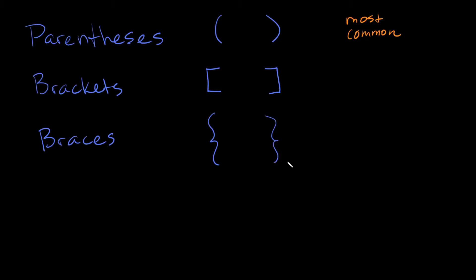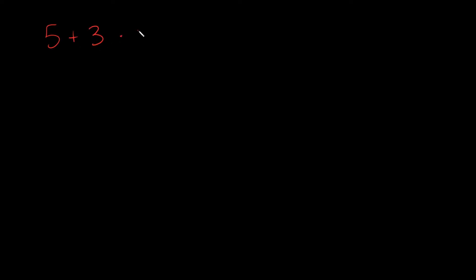Okay so let's do an example. If I wrote five plus three times two, where the parentheses are matters — it is super important. You always solve whatever is inside the parentheses first. So if I put the parentheses around five plus three, that is what you solve first. Five plus three equals eight. Now we can deal with what's outside: eight times two, which is 16.